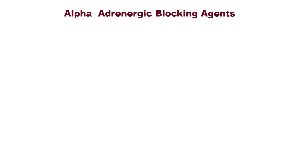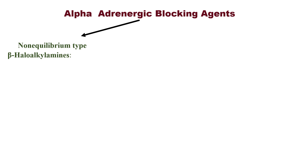Alpha adrenergic blocking agents are agents which block alpha adrenergic receptors. They are divided into non-equilibrium type — here non-equilibrium means no balance. Remember the substance that is difficult to balance — that is a halo substance. So remember 'halo' and write beta-halo alkylamines.